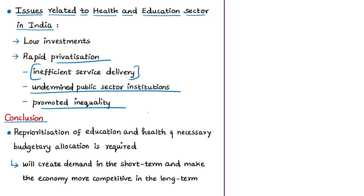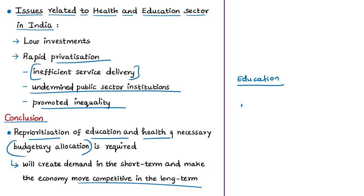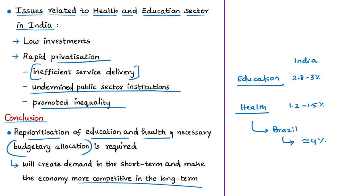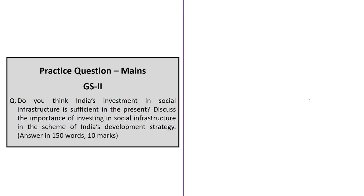The author concludes by saying it is time to reprioritize education and health in the country's development strategy with sufficient allocation of budgetary resources. Investment in these sectors will create employment, ensure better employability and competitiveness, and generate demand benefiting the economy. Currently India spends around 2.8–3% of its GDP on education and just about 1.2–1.5% on health — compared to Brazil's approximately 4% of GDP on health and the United Kingdom's approximately 8% of GDP on health.